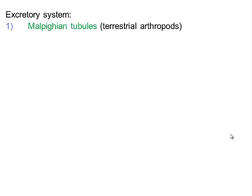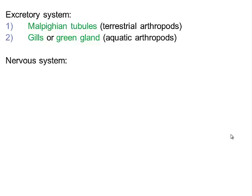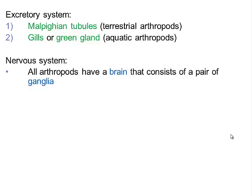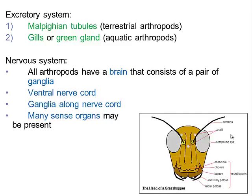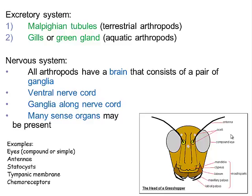For the excretory system, specialized tubes are mostly used in terrestrial arthropods, while aquatic ones use gills or a green gland. For the nervous system, all arthropods have a brain consisting of a pair of ganglia — nervous tissue — with a ventral nerve cord and additional ganglia along it. They also have many sense organs including eyes, antennae, and sensory tissue around the mouth.